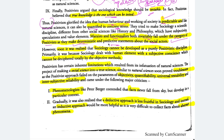However, it was soon realized that sociology can't develop as a purely positivistic discipline because you deal with humans. There are feelings and motives and you cannot just sideline them and study. Primarily, it was because sociology dealt with the human element — with a subjective conscience which cannot be deciphered totally by the objective method. For example, in researching marital relations, until the researcher understands the feelings and motives involved, they cannot truly research it. Your subjective conscience is also very important.